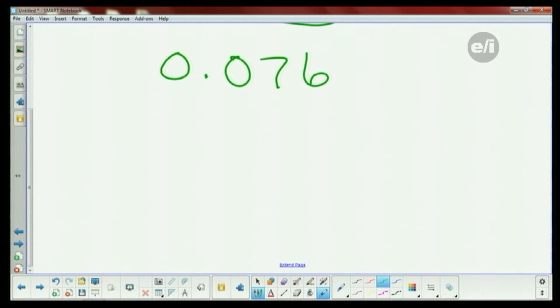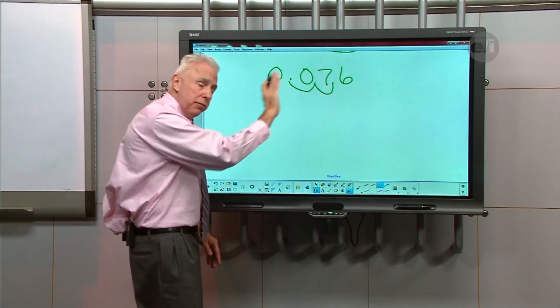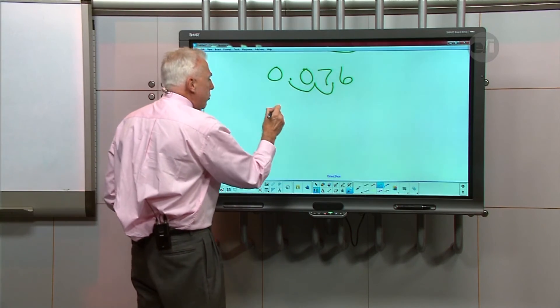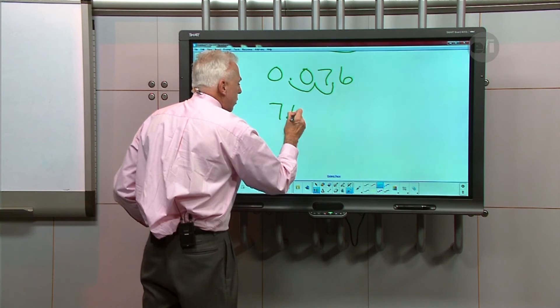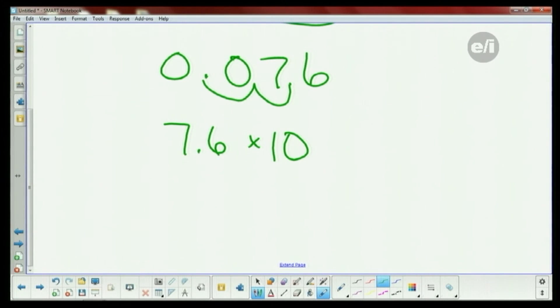That value clearly is a number less than one. What we want to do is we want to have one digit to the left of the decimal point. So we'll move the decimal point one spot to the left, a second spot to the left. But this time, we didn't move left, we moved to the right. So we would write this one down in scientific notation as 7.6 times 10 to the negative 2 power.